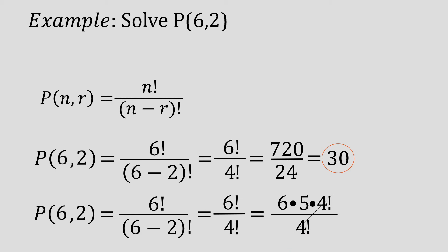And hence, what is left is 6 times 5. So we have 6 times 5 is equal to 30.